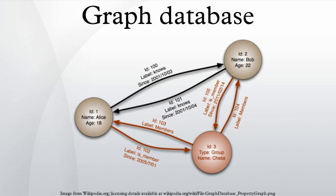General graph databases that can store any graph are distinct from specialized graph databases such as triple stores and network databases.